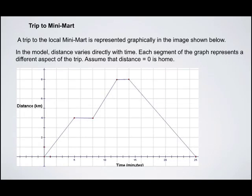Which means that whenever the graph is along the x-axis or the independent axis, that means that the distance from home is zero. So at the very beginning of the graph, at zero minutes, the person is at home. And at the very end of the graph, at 25 minutes, the person is at home as well. Anytime where they are not on that independent or horizontal axis, they are not at home.